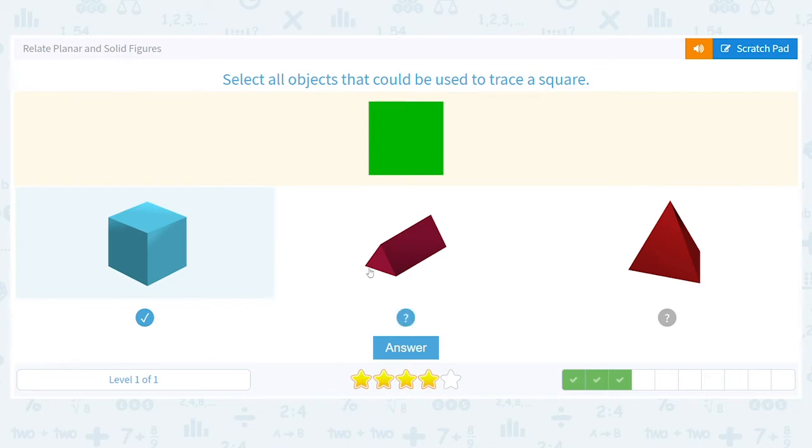We know this prism can't work. And can this base of the pyramid work? We can't see it. But could it work?